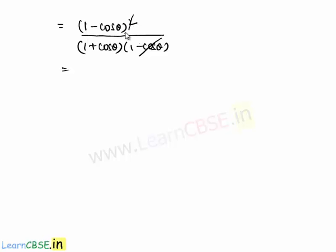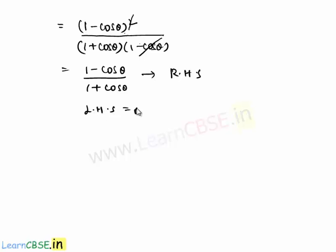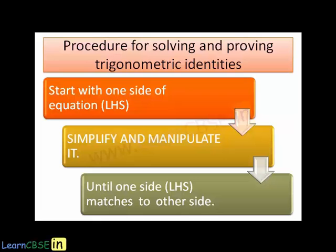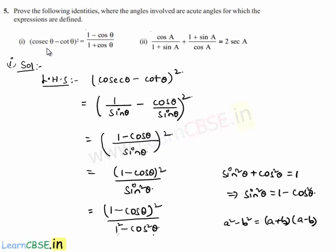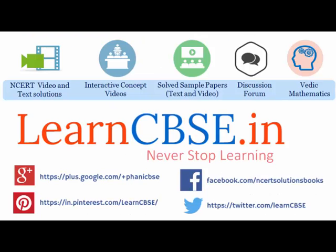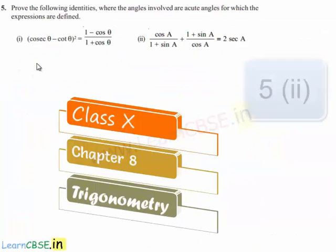After cancellation, we are finally left with (1 - cos θ) / (1 + cos θ), which is our right hand side. So LHS = RHS, and we have proved that (cosec θ - cot θ)² = (1 - cos θ) / (1 + cos θ).